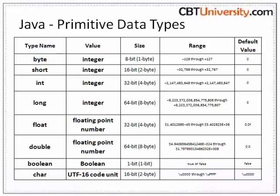Boolean: the boolean data type has only two possible values, true and false. Use this data type for simple flags that track true-false conditions. This data type represents one bit of information.